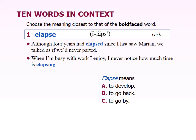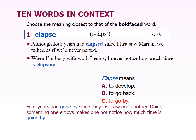So here's our first word: elapse. 'Although four years had elapsed since I saw Marian, we talked as if we'd never parted.' 'When I'm busy with work I enjoy, I never notice how much time is elapsing.' So elapsing means to go by. And if you look on page 51, the definition given for elapse is to pass by or slip by, and it's usually said of time.